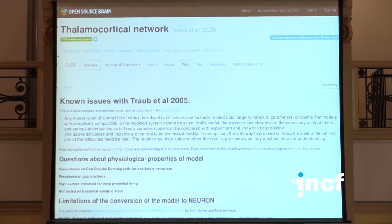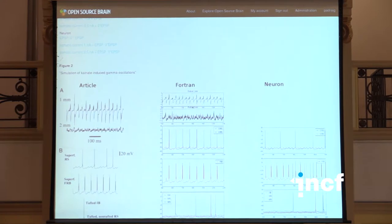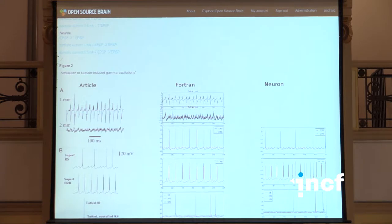Associated with the projects on Open Source Brain there's also a wiki. Roger Traub himself admitted the model is very preliminary, but there is a place where people can come and discuss the limitations, some of the difficulties installing it, and the physiological properties of the model. There's also a form where, in this example, Helena has tried to reproduce some of the figures from the paper in the slightly updated Fortran and in her version of Neuron. This makes the model more accessible — you can actually see what people have done with it. It's a way for groups to get together around specific areas and move interesting models forward, all in open source.